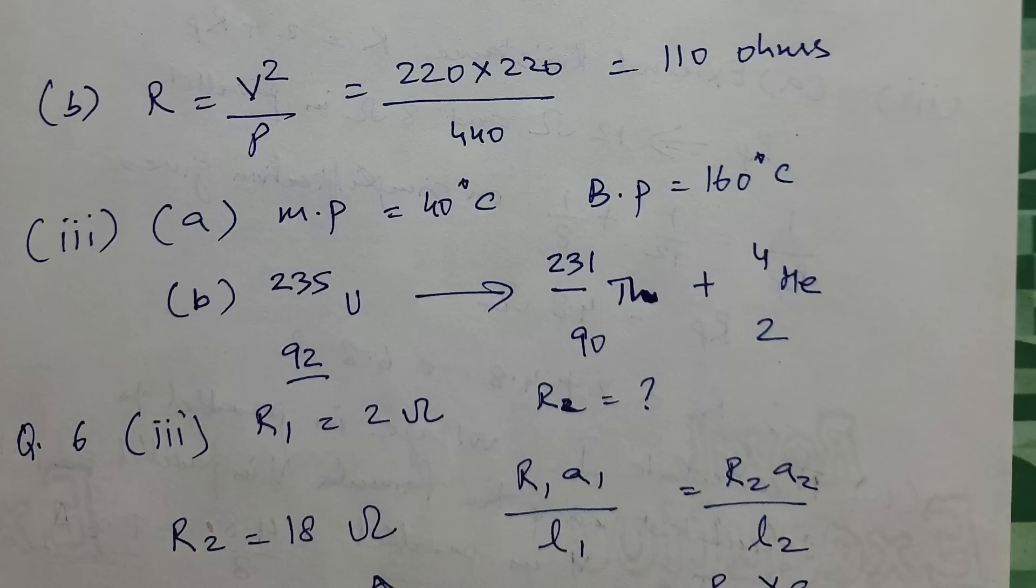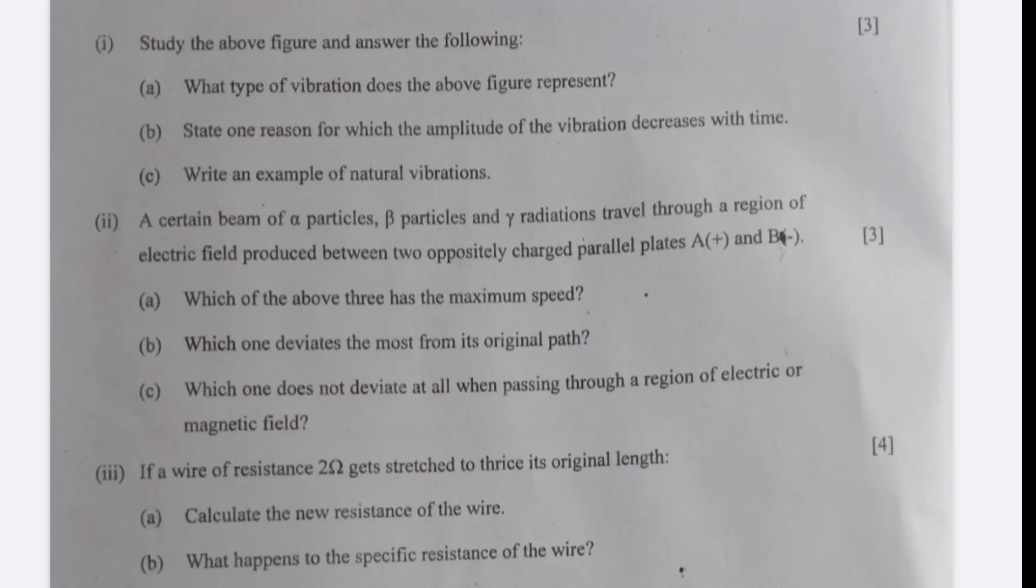Study the above figure and answer the following. What type of vibration does the above figure represent? It represents damped vibration A. State one reason for which the amplitude of the vibration decreases with time: due to resistance offered by the medium which is air. Write an example of natural vibrations: tuning forks vibrating in vacuum or for that matter any object operating in a vacuum.